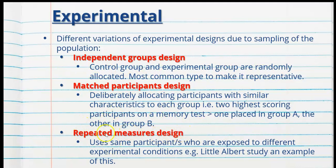We also have a repeated measures design, where the same participants are exposed to different experimental conditions. The Little Albert study is an example of this. Little Albert was the same participant exposed to different conditions — first the white rat and other stimuli showing no fear, then a loud noise paired with the white rat, then the rat presented again after conditioning. The experiment was repeated to get more data and confirm the correlation between the noise paired with the rat and Little Albert's fear. The same participants are used and it's repeated several times to ensure consistency.